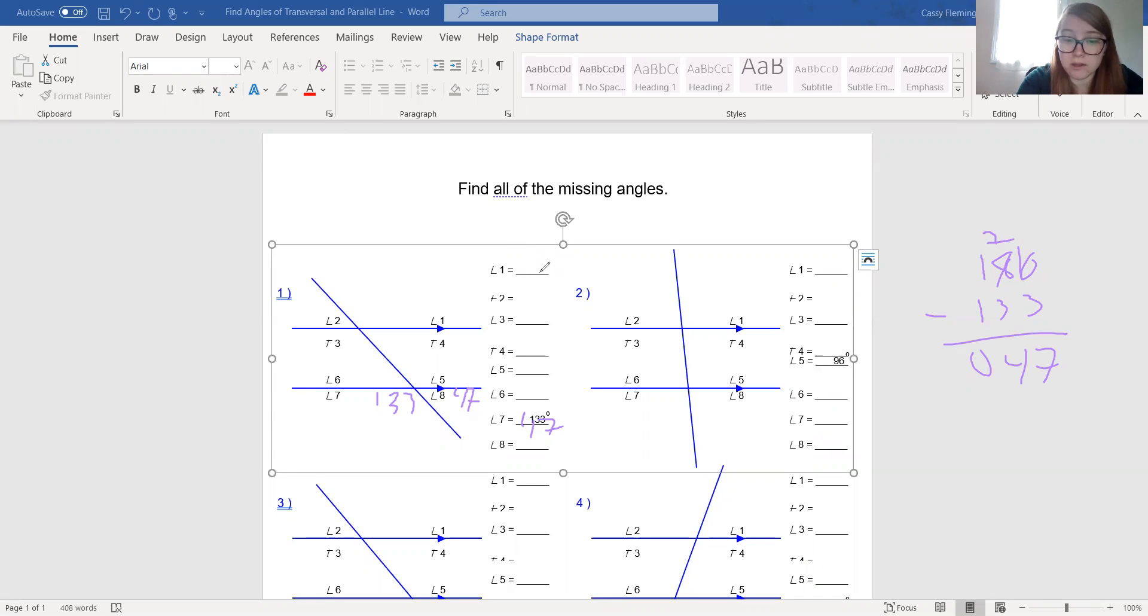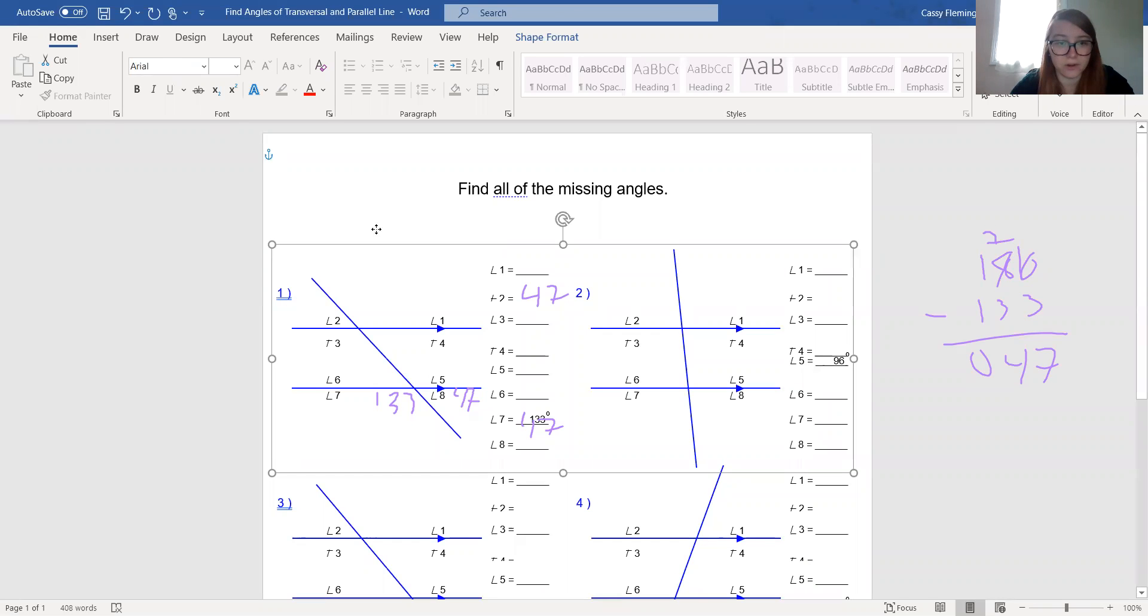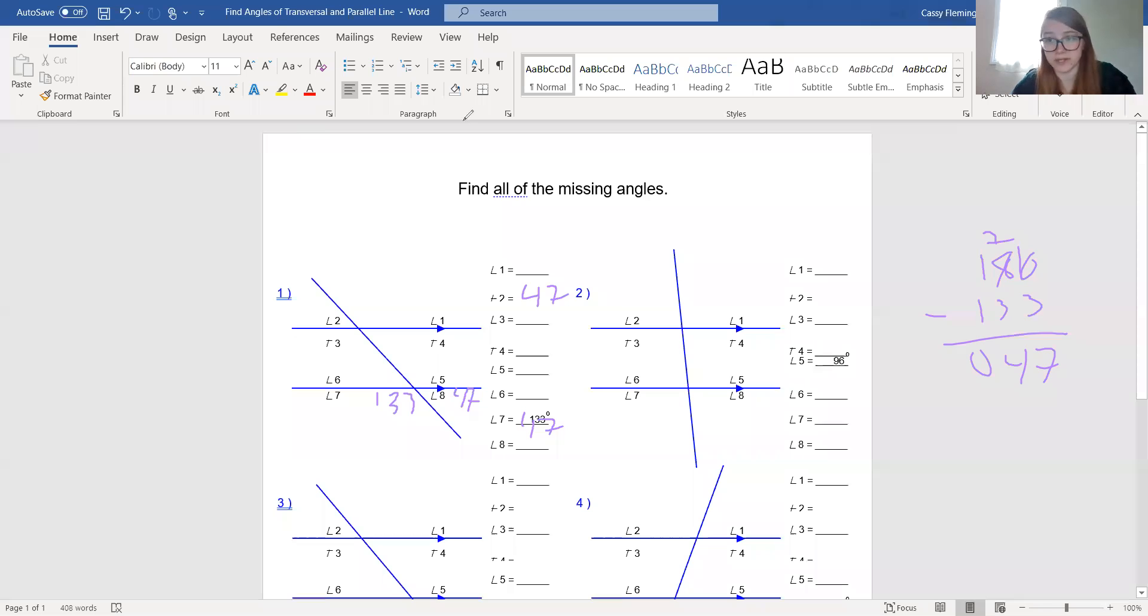We know that angle 2 needs to be 47 as well. So 2 is 47, 8 is 47. I'm going to write them on here as well. Well, that being said, let's think of that alternate exterior angle thing again. If this angle 7 is 137, its alternate exterior is angle 1. So we know angle 1 is also 137. All right, we're halfway there.